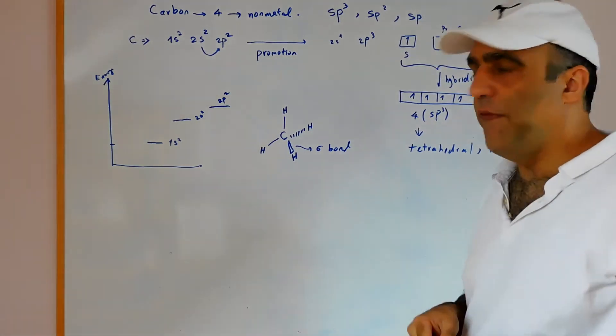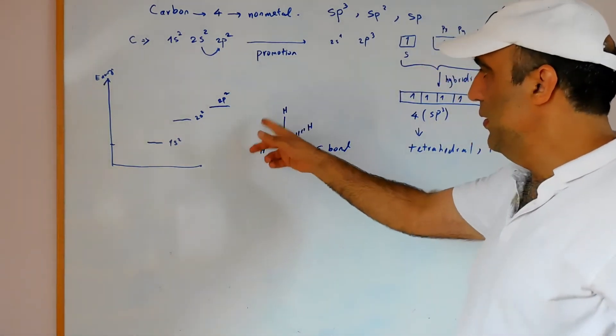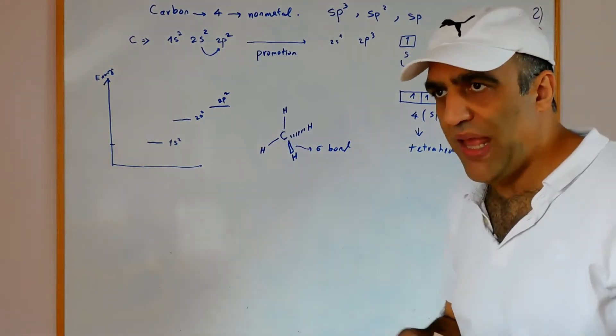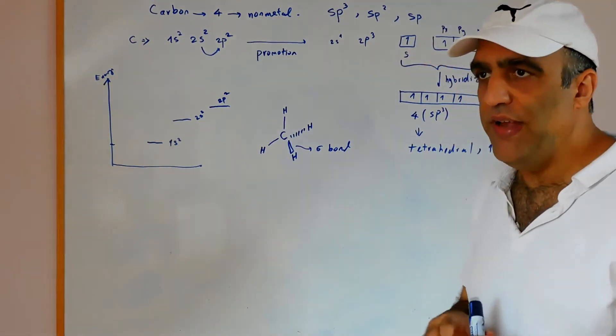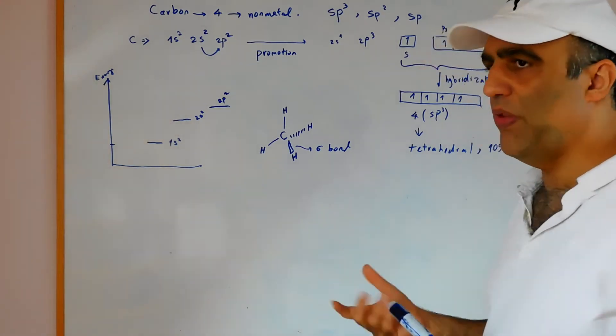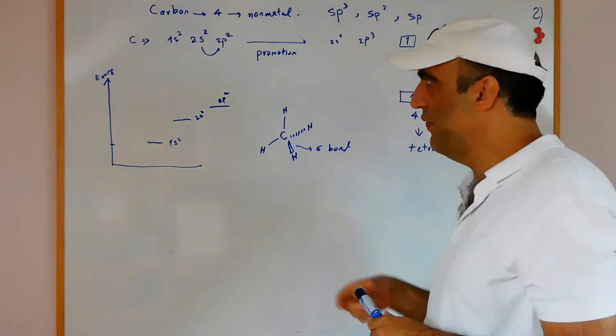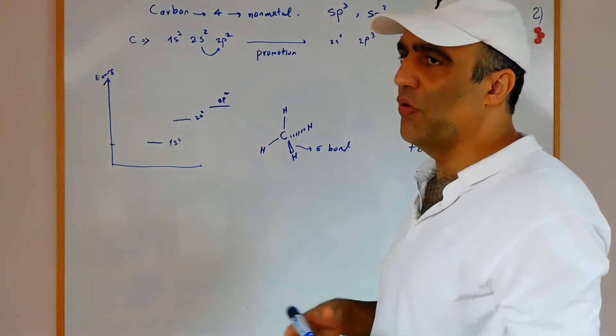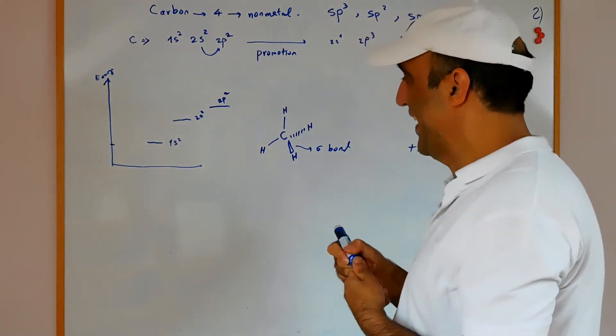All of the bonds are sigma and saturated. We don't have any double bond or triple bond. The main functional group for this type is alkane. Alkane is the best example for sp3.